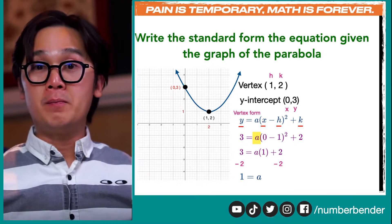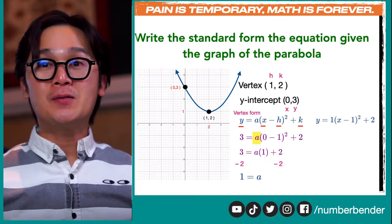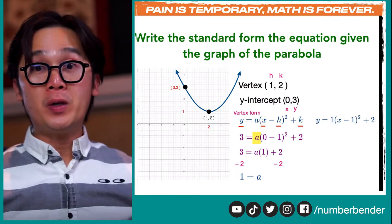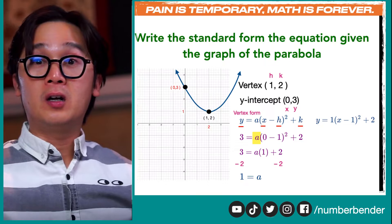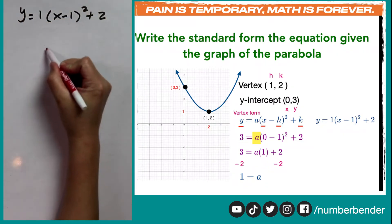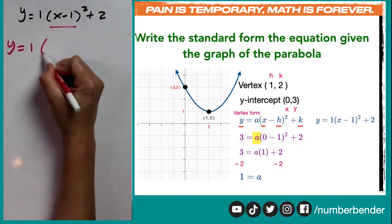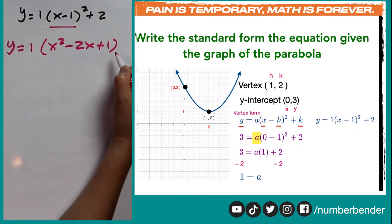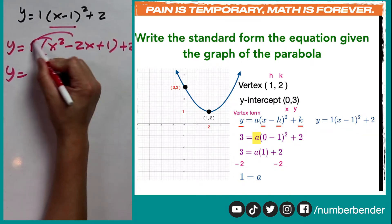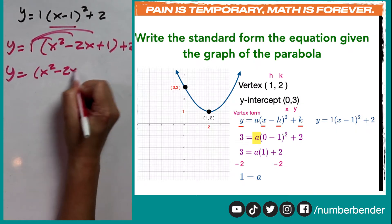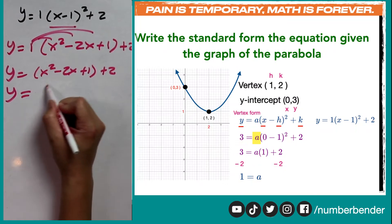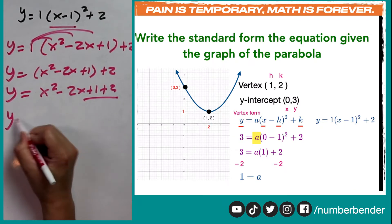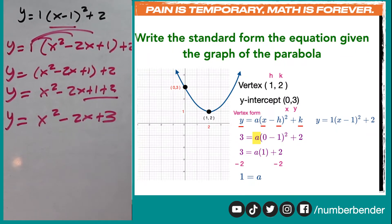Now we're ready to write the vertex form: y equals 1 times quantity x minus 1 squared plus 2. To find the standard form, we expand the binomial. The expansion of x minus 1 squared gives y equals 1 times x squared minus 2x plus 1 plus 2. Distributing the 1 and using the associative property to combine 1 and 2, the standard form is y equals x squared minus 2x plus 3.